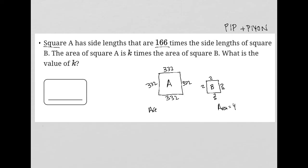The area for square A would equal 332 times 332, which is equal to 110,224. We're told that the area of square A, this 110,224, is—'is' always means equals—K times the area of square B, or 4K.